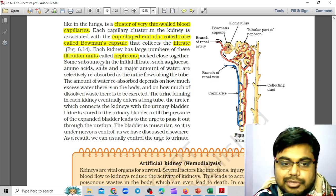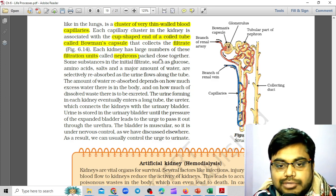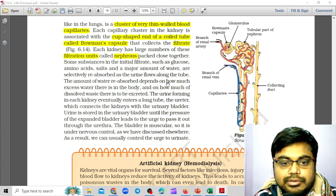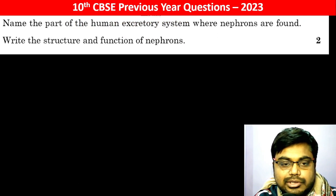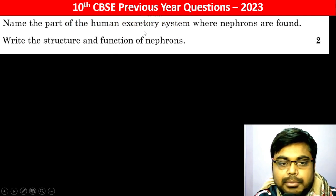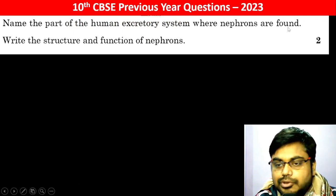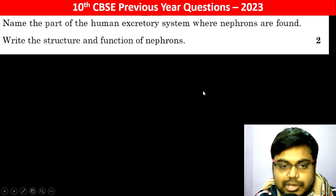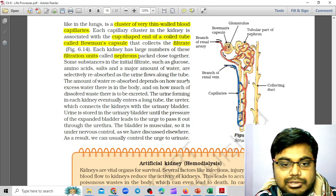Each kidney has a large number of these filtration units called nephrons, which are packed close together. The first question: name the part of the human excretory system where nephrons are found — that is, the kidney. Write the structure and the function of nephrons.